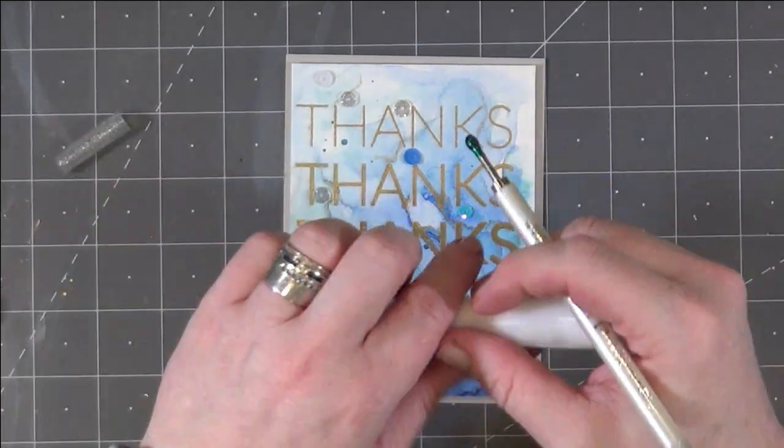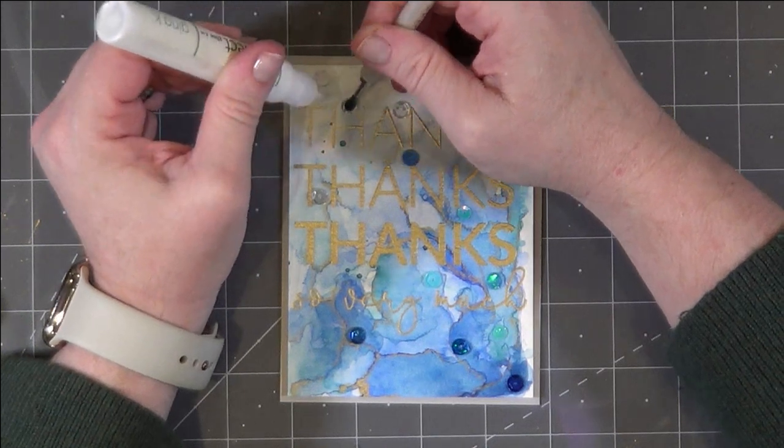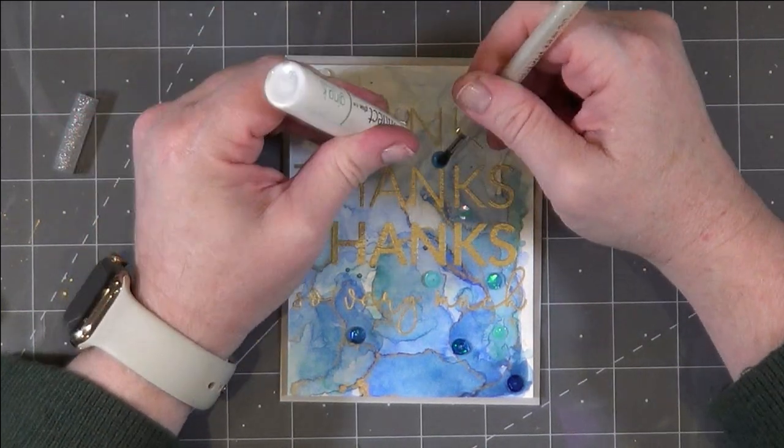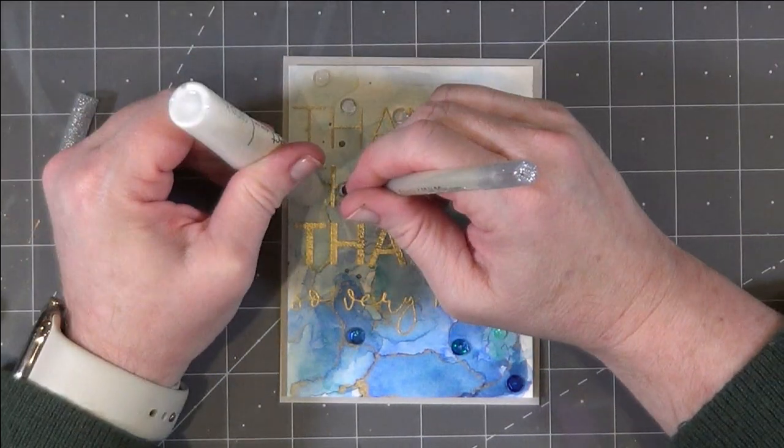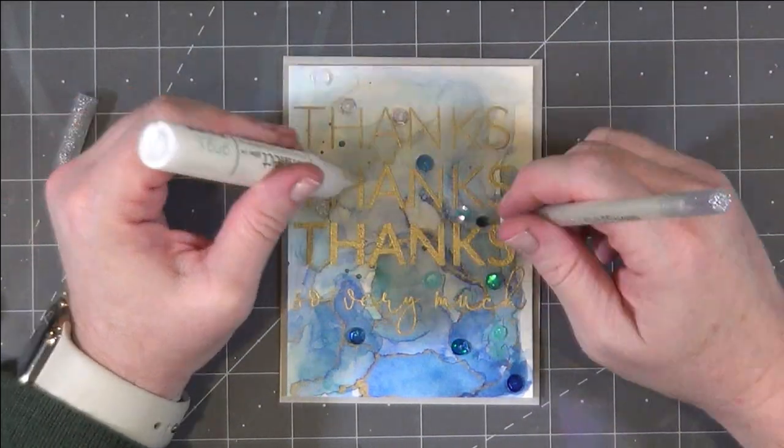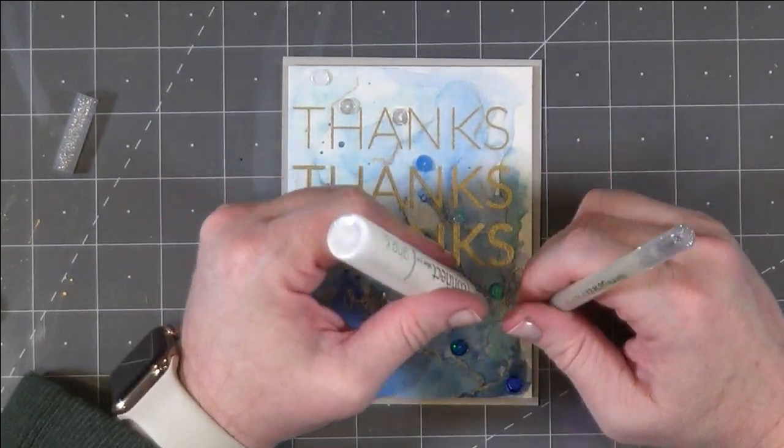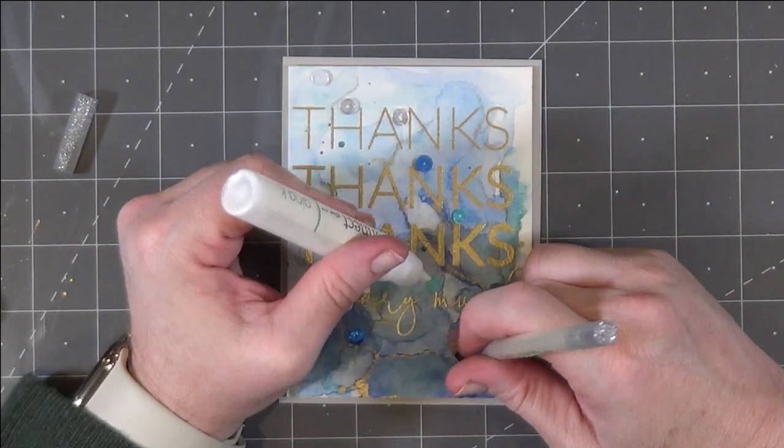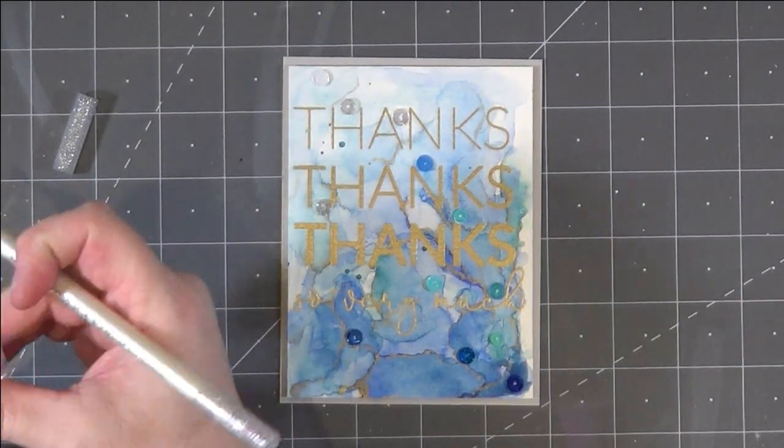I used my jewel picker, which is a fantastic tool, and some Gina K Connect Glue, and I'm adding those to the front of the card, trying to tie them in with the colors that are underneath, going from whites and darkening down until a darker blue.